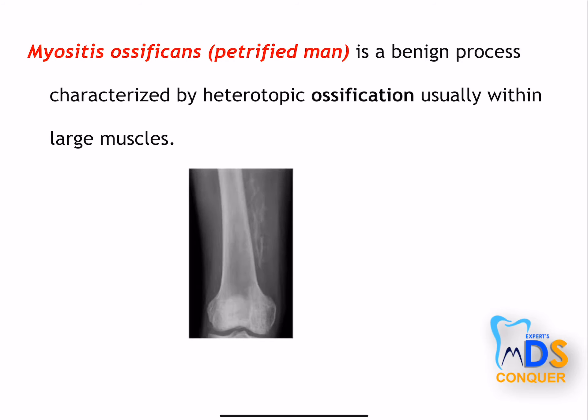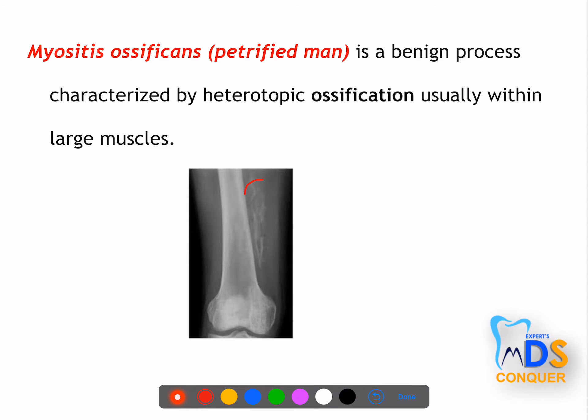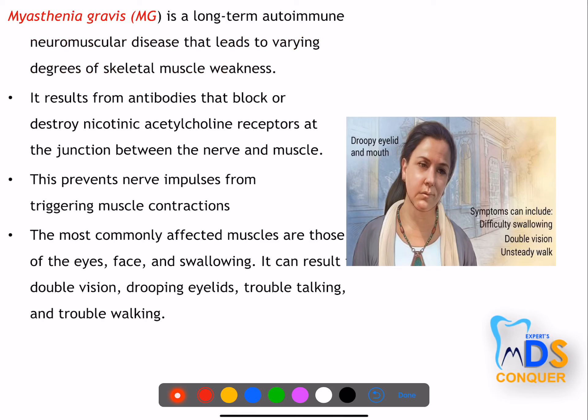Myositis ossificans, also called the 'petrified man,' involves heterotopic ossification within large muscles. The muscles show intense calcification and bone deposition, making them very stiff.